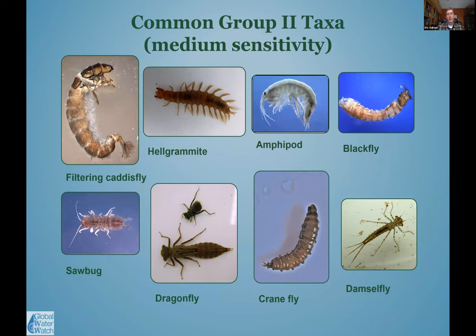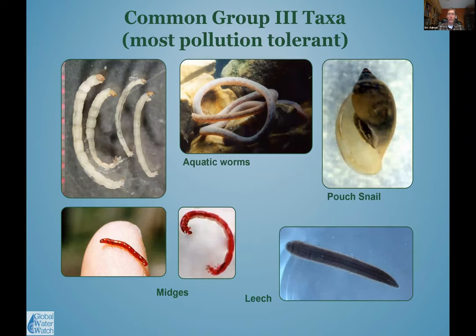Identifying these creatures gets easier after you've seen them a few times. We use guides with lots of pictures to help identify exactly what we're looking at, and it helps to have someone with experience. For example, amphipods — referred to as scuds — can be identified by how they look and sometimes how they move. Black flies tend to stick to surfaces and wave around. Group 3 — the most pollution tolerant — includes certain snails, leeches, midges, and worms; finding only those indicates poorer water quality.